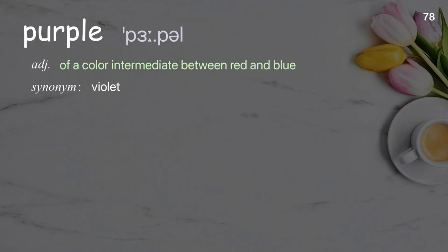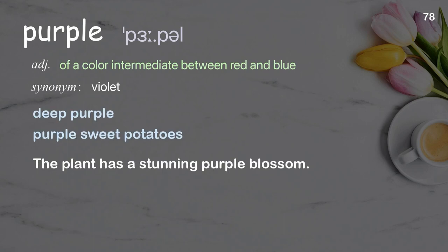Purple. Of a color intermediate between red and blue. Examples: deep purple, purple sweet potatoes. The plant has a stunning purple blossom.